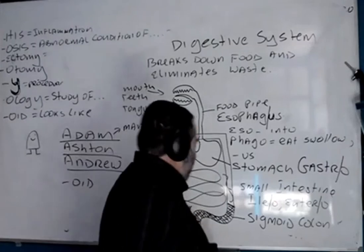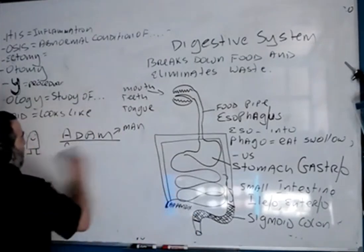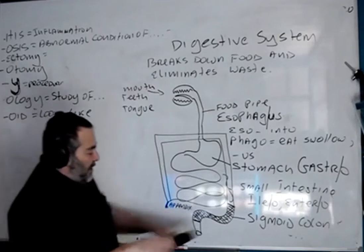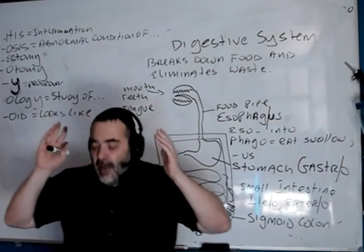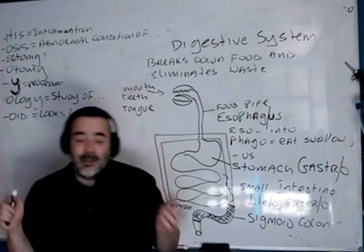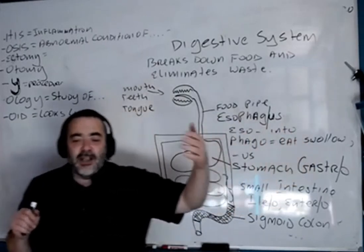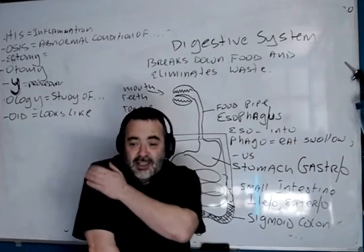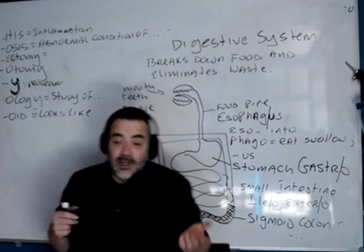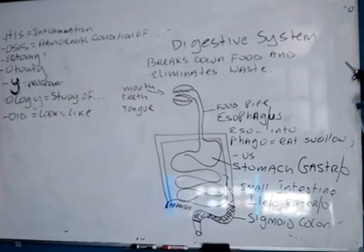Just to reinforce the use of the suffix -oid: human and humanoid — something can be human, or something that looks like a human but isn't. Deltoid — it's actually something that looks like the Greek letter delta. That's why they call it the deltoid muscle. Every time you see -oid on the end of a word, it means 'looks like something.'